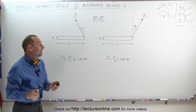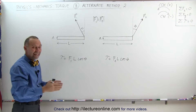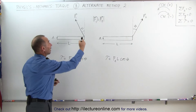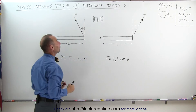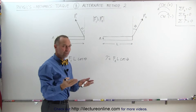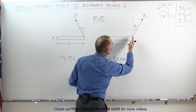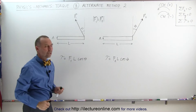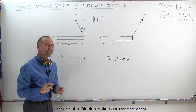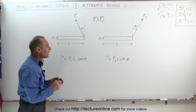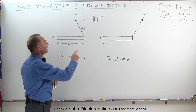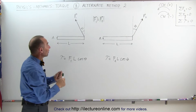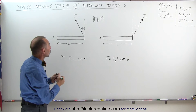Now is that indeed the case? Are the two torques exactly the same even though in this case the force is pulling to the left relative to the vertical and this force is pulling to the right relative to the vertical? The best way to see that is by taking these two forces and writing them as the sum of their two components.